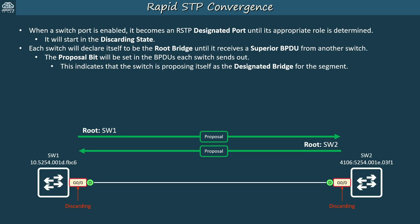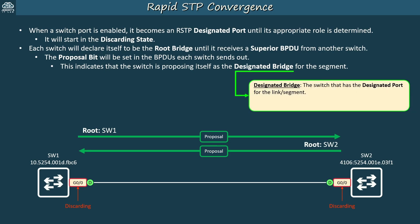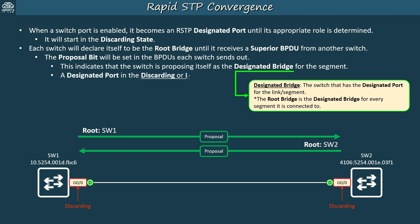The designated bridge is the switch that has the designated port for a segment. In an STP or RSTP LAN, every segment must have exactly one designated port, and the switch that has a segment's designated port is that segment's designated bridge. The root bridge is the designated bridge for every segment it is connected to. So SW1 and SW2 both think they are the root bridge and are therefore proposing themselves as the designated bridge for the link between them. In RSTP, a designated port in the discarding or learning state always sets the proposal bit on BPDUs it sends to attempt to initiate the sync process.